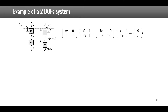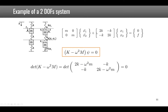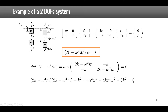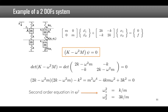We illustrate the computation of the free response for the two degree of freedom system with two masses and three springs. From K minus omega-squared M times psi equals zero, we know the K and M matrices, so we compute the determinant of this expression, which gives a fourth-order equation. However, since there are only even powers of omega, we substitute a new variable so we have a second-order equation in omega-squared.